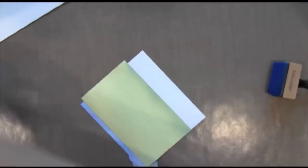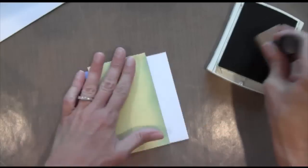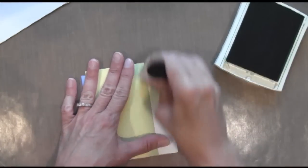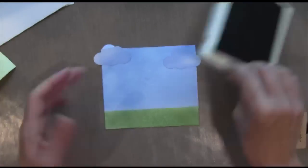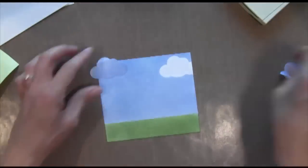Then I'm going to flip my post-it around. So now I'm masking the sky and I'm going to apply wild wasabi ink to the bottom for the grass. Alright, so I'm going to peel that away.